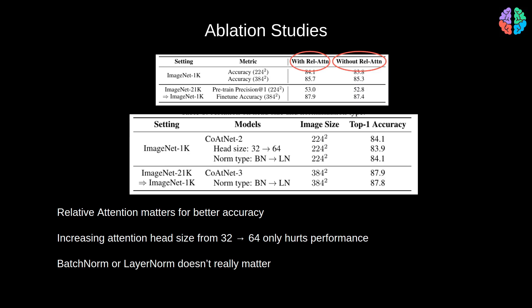They also study the significance of the size of the attention head. So here, they increase the head size from 32 to 64 and notice that the head size of 32 performs better compared to the head size of 64. Whereas the head size does matter, the type of normalization used namely batch normalization or layer normalization doesn't seem to matter.